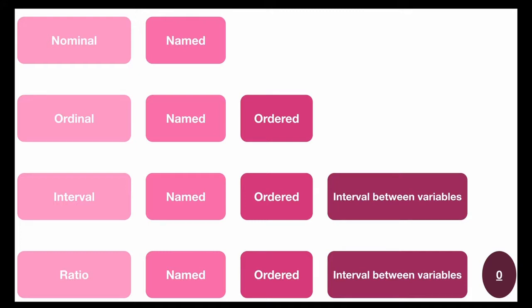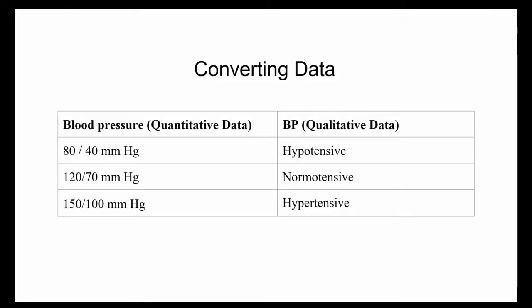Lastly, the ratio scales. These are variables that have all the properties of the interval variable and also have a clear definition of a true zero. The best example is the Kelvin temperature scale, where there is no number below zero. Other examples include enzyme activity, dose amount, reaction rate, flow rate, concentration, pulse, weight, and length.